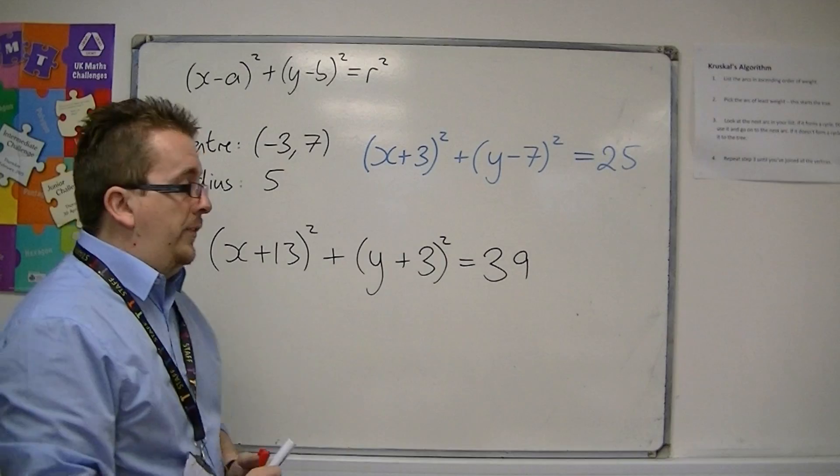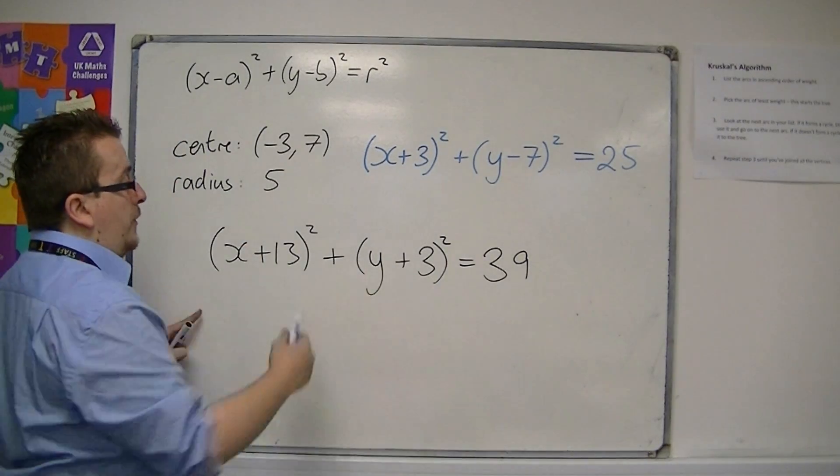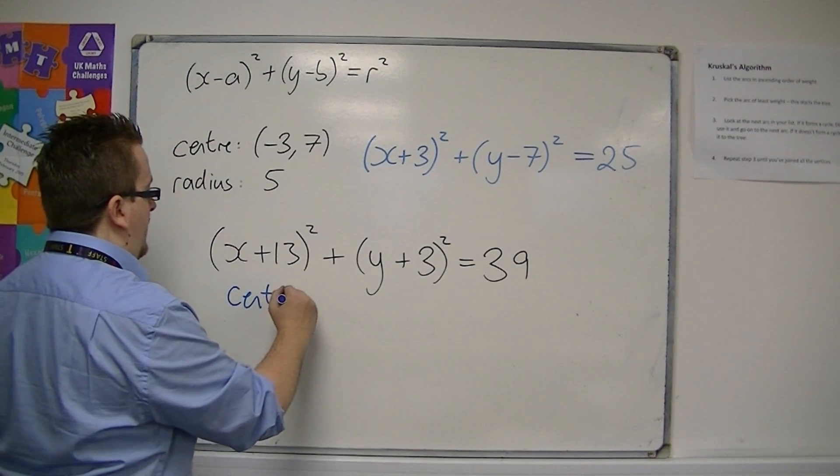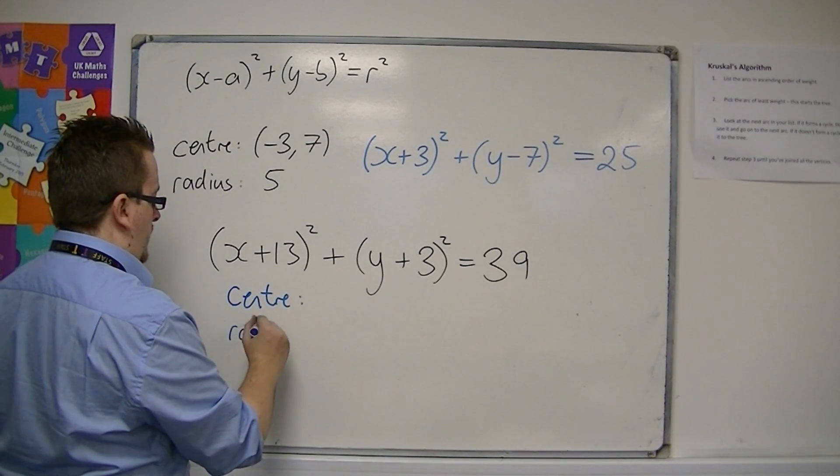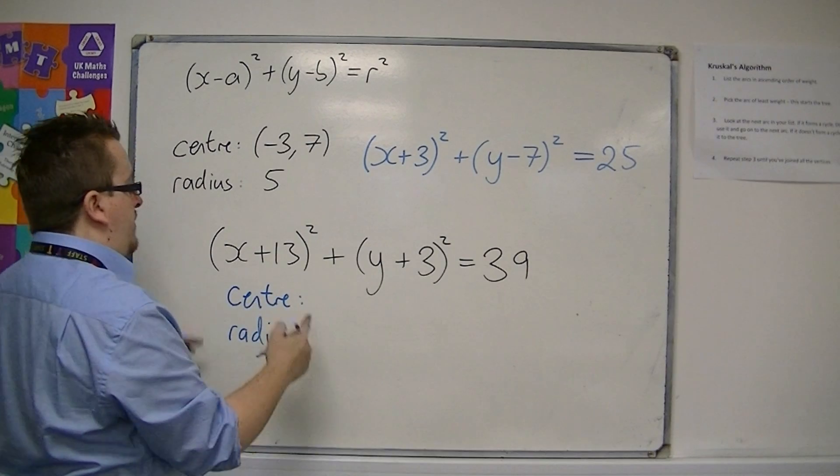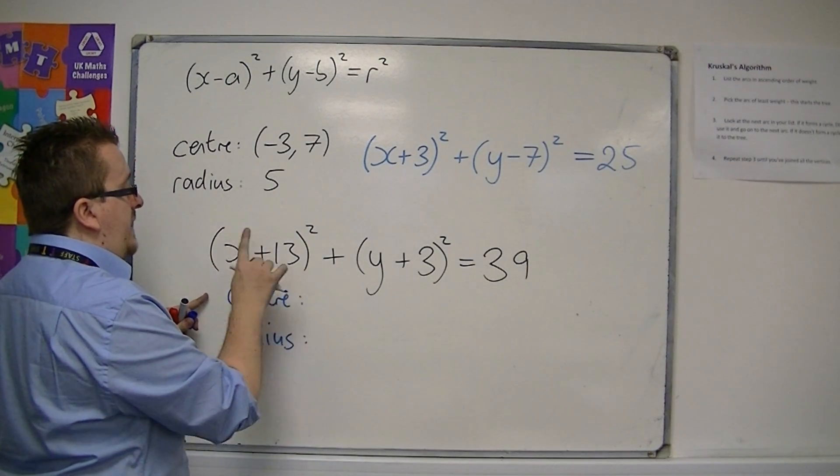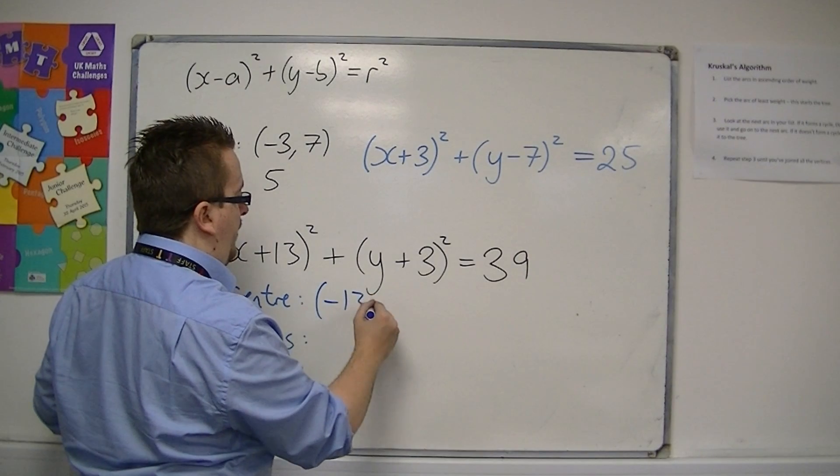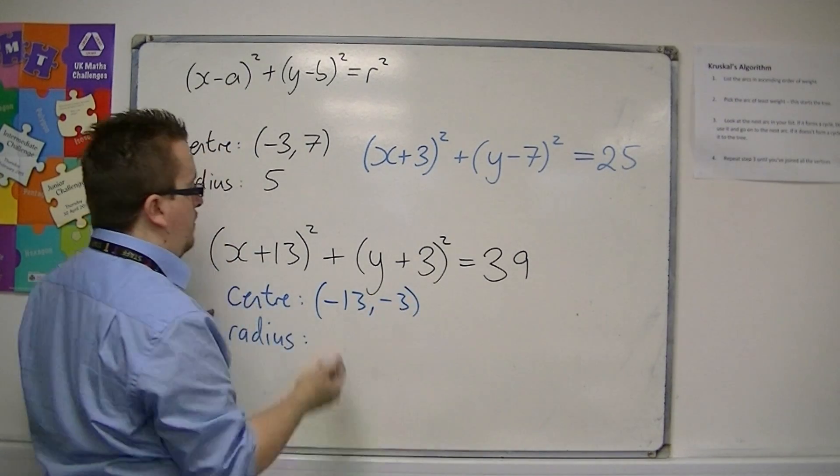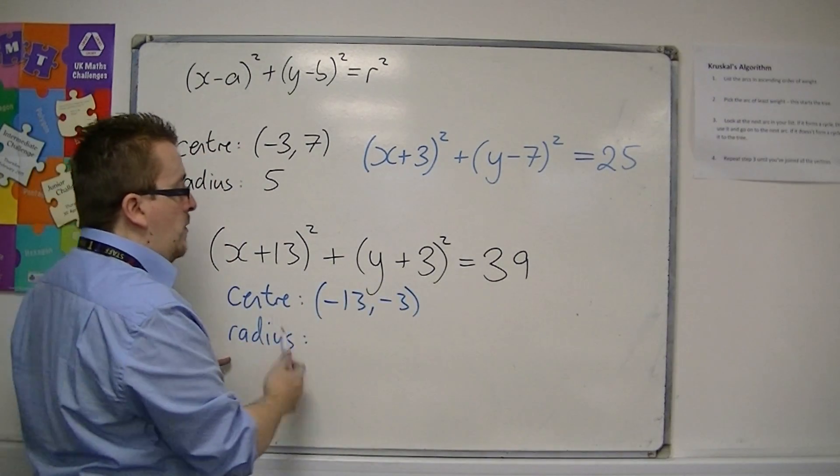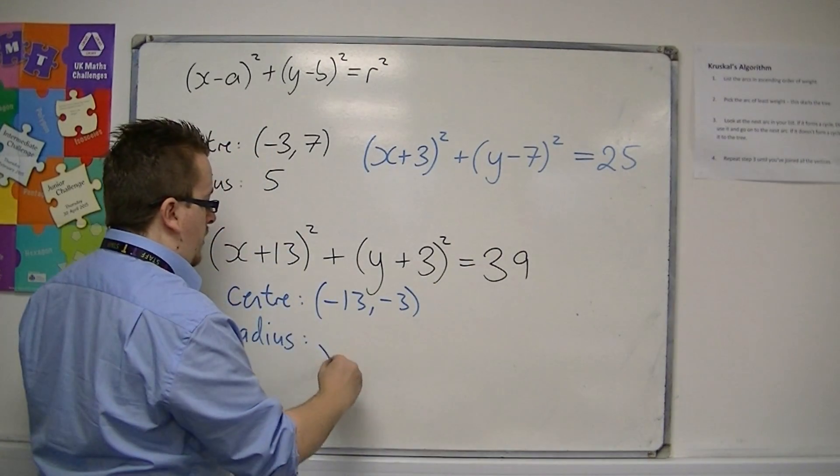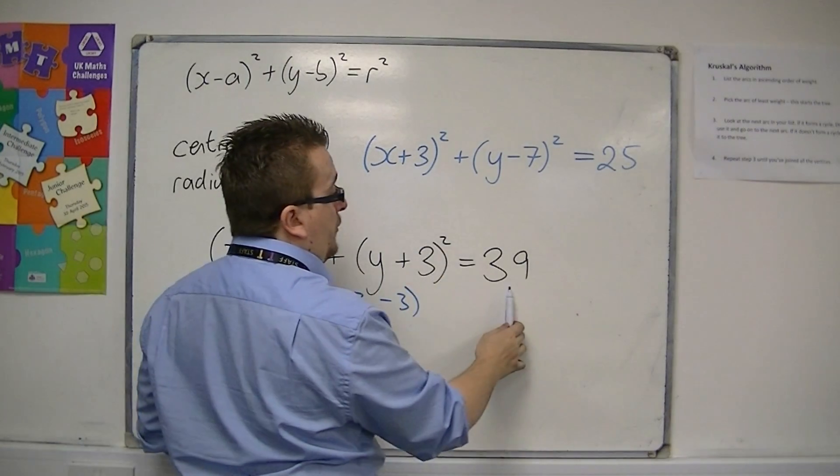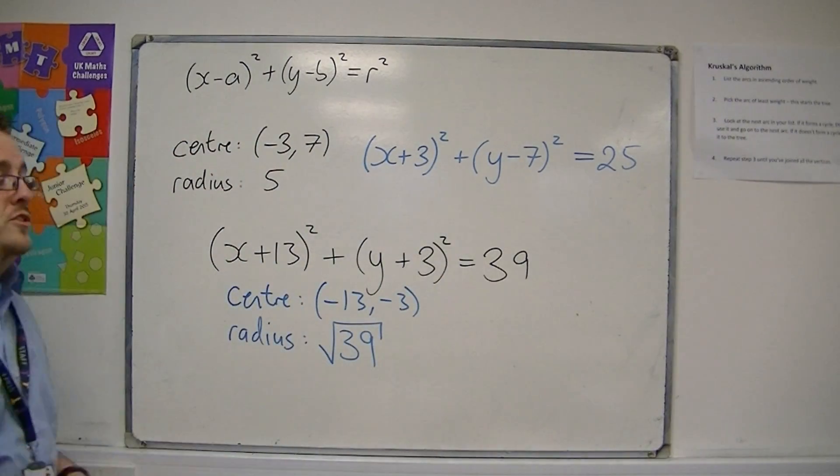then you must be able to go from this equation to writing down the coordinates of the center and the length of the radius. So the center would be located at (-13, -3). Notice how the sign changes for both brackets. And the radius is the square root of 39 because r² = 39, so r is √39.